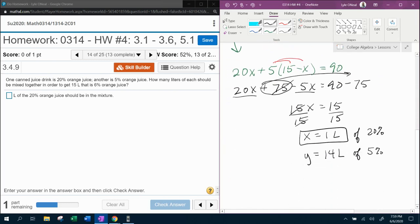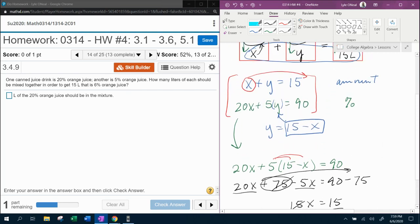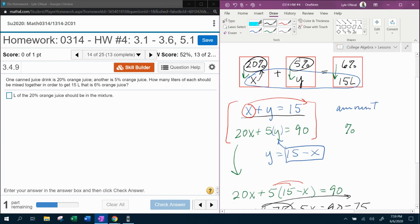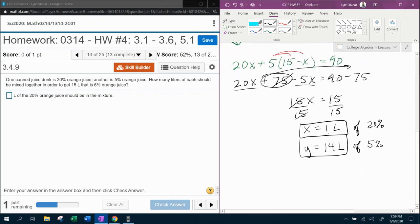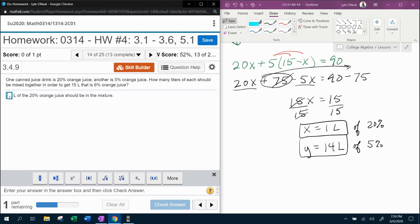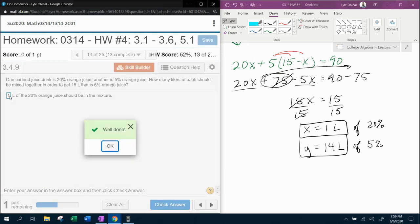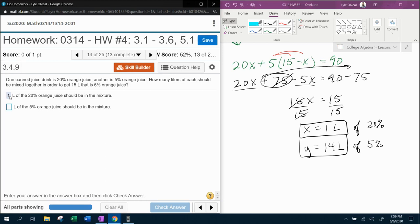And I can already feel some of you are going, where did the 14 come from? Well, remember up here that the equation says the two amounts have to make 15. And so 14 and 1 makes 15. So that's how I knew the Y was 14. And now we are done. So let's fill in. 20% we're going to use 1 liter. And for the 5%, 14 liters.